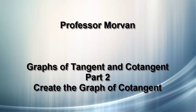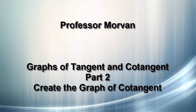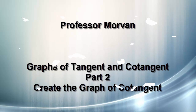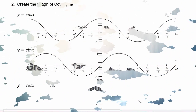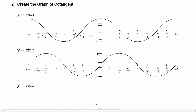In part two of our lesson on graphs of tangent and cotangent, we will create the graph of cotangent. We know that cotangent of x is equal to cosine of x divided by sine of x.